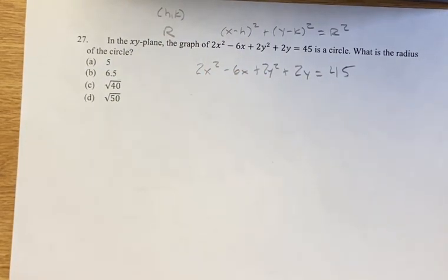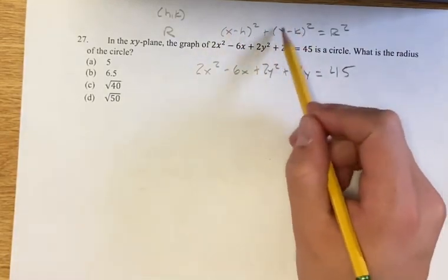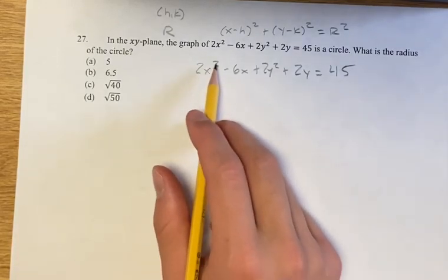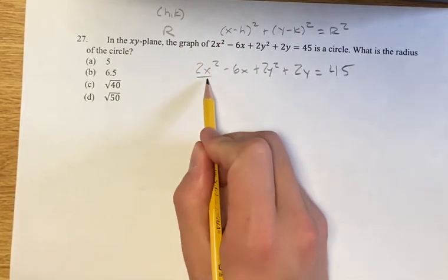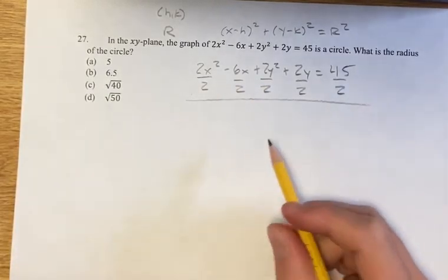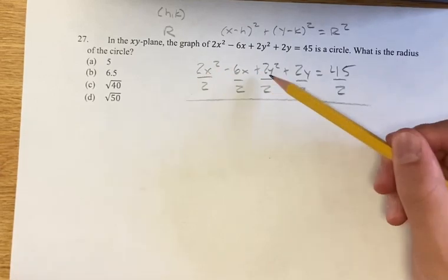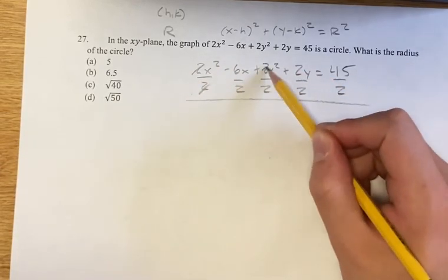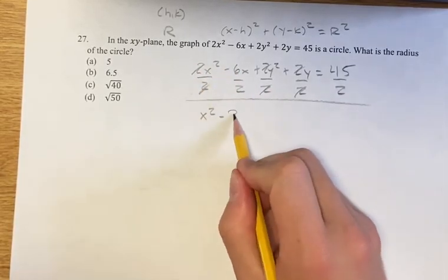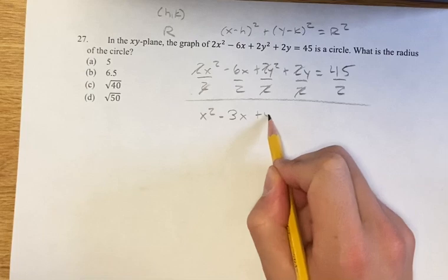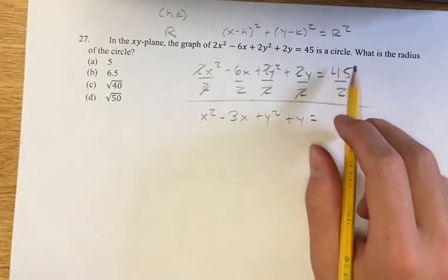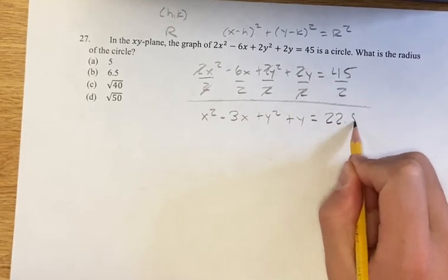So how do we find this? First, in these squared binomial terms, x doesn't have a coefficient on it. So what we want to do is get the x squared terms alone. If we divide everything by 2 on both sides — don't forget the 45 — we have 2x squared, 2y squared, and 2y, so in all these terms the 2s just cancel. We get x squared minus 3x plus y squared plus y equals 45 over 2, which is 22 and a half.